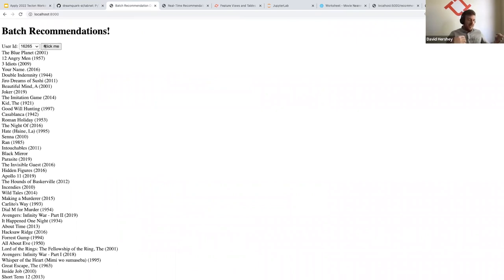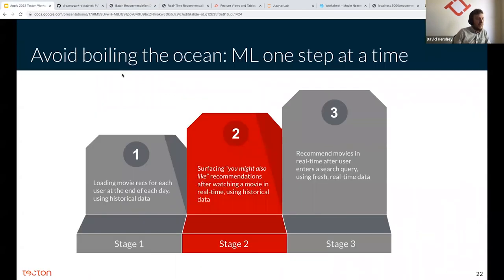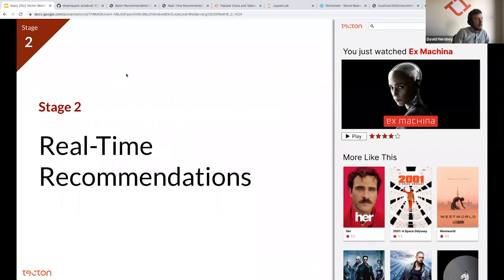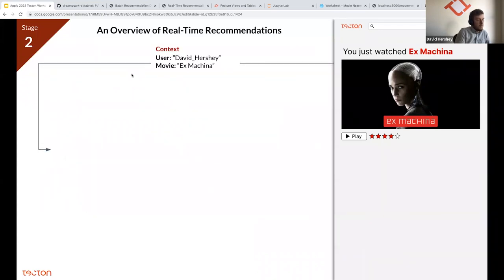Now let's build out stage two — the advanced real-time recommendation system. If a user has just watched a movie, we recommend a set of movies they might also like. This involves real-time inference at large scale with a lot of data. I want to walk through how real-time recommendation systems are typically laid out. If I just watched Ex Machina, the system calls the back end with 'David Hershey just watched this movie,' which passes through three stages to generate recommendations.